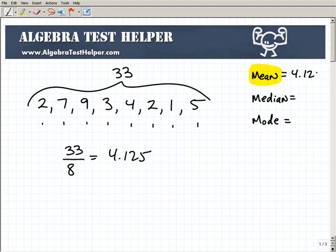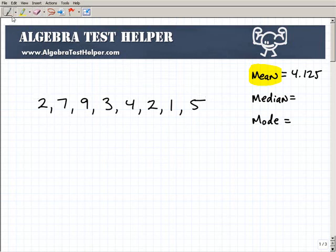4.125 is our mean or average. That's one way of looking at this set of information, but it's not the only way. The other two things - the median and mode - are also other perspectives on this group of information.